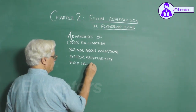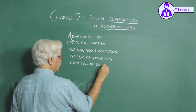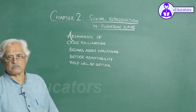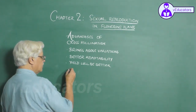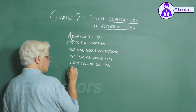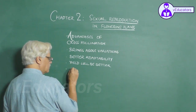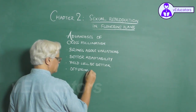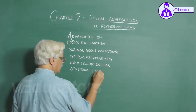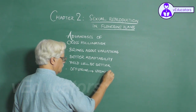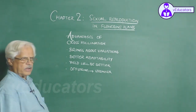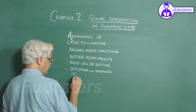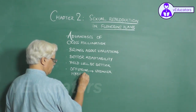The yield will be better in cross-pollinated plants. Another advantage is the offspring will be stronger — the resulting offspring plants will be much stronger than the parental plants, and this situation is known as hybrid vigour.